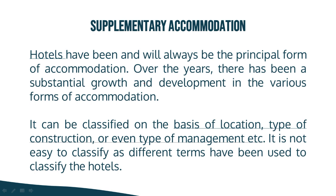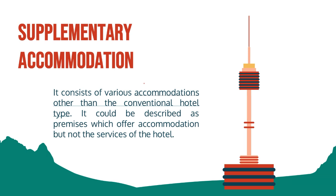Hotels can be classified based on location, star category, and type of management — whether it is a franchise hotel, an independent hotel, or a chain hotel. Here, we are going to talk about what supplementary accommodation is. Supplementary accommodation consists of various accommodations other than the conventional hotel. It could be described as premises which offer accommodation but not the full services of a hotel. In other books, supplementary accommodation is considered as the secondary accommodation for a budget-oriented tourist.